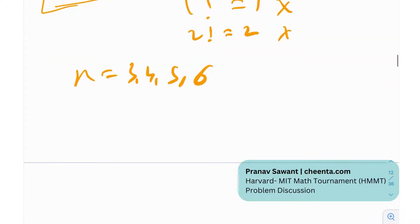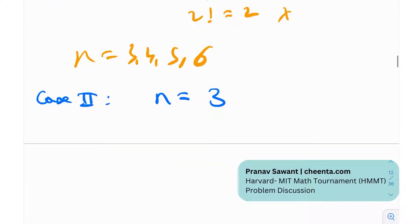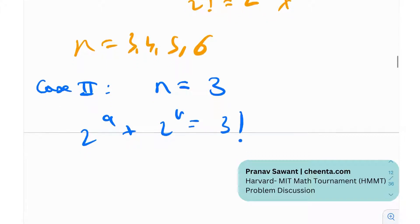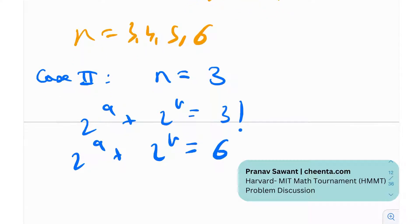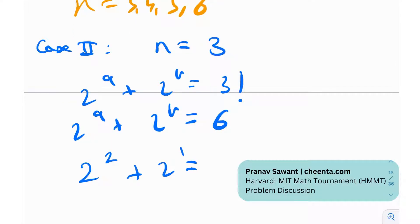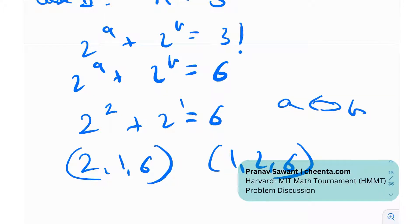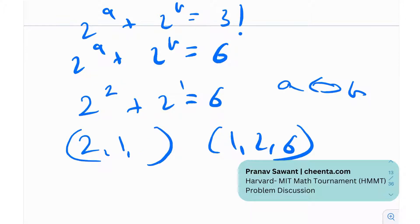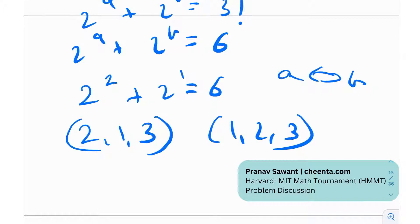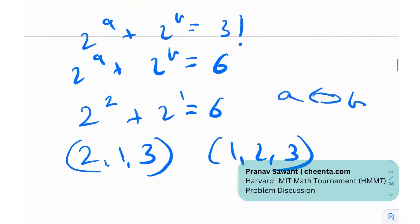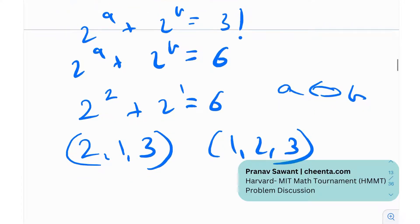Case 2: n = 3. Then 2^a + 2^b = 3! = 6. We get 2^2 + 2^1 = 4 + 2 = 6. So the solutions are (a, b, n) = (2, 1, 3) and (1, 2, 3). Never forget symmetry in these problems — since a and b are symmetric, both orderings count as distinct solutions.